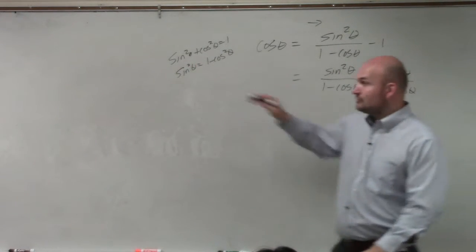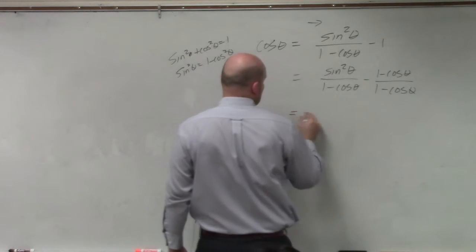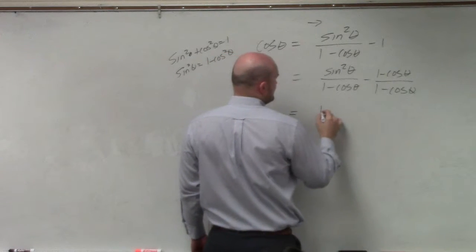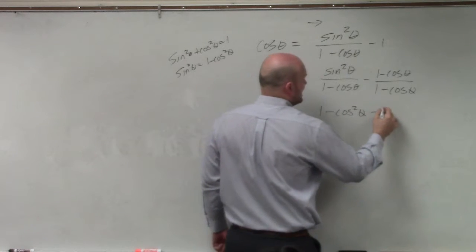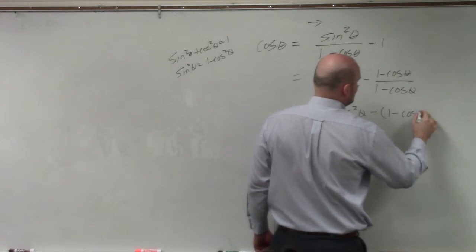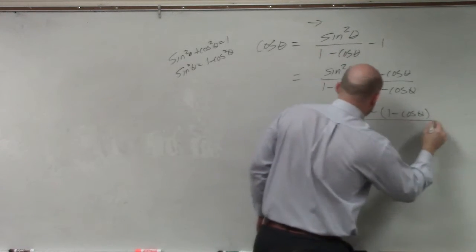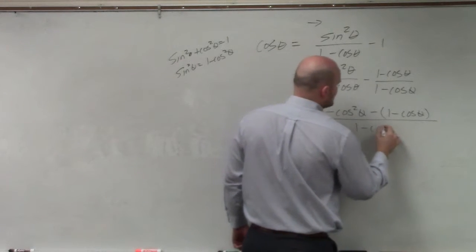So let's now use our identity. And let's try this out. So I can rewrite this as 1 minus cosine squared of theta minus 1 minus cosine of theta all over my common denominator of 1 minus cosine of theta.